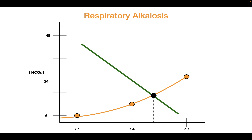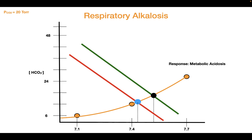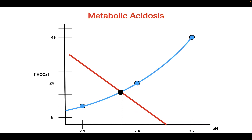Now what about a respiratory alkalosis? If you have a respiratory alkalosis, the opposite is true — the body is going to compensate with a metabolic acidosis. What you see here at the intersection is that the pH is now closer to 7.4. So the response to a respiratory alkalosis is a metabolic acidosis.